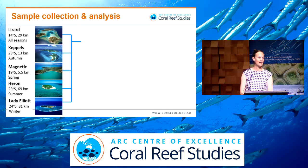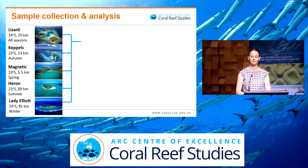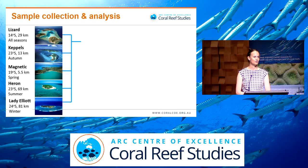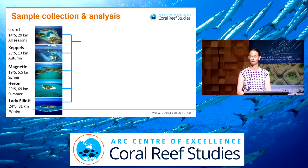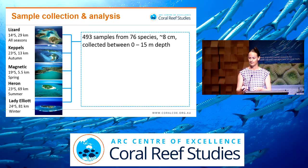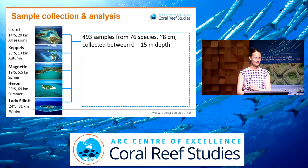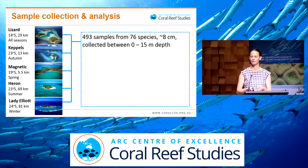The study design was to sample corals at many different locations along the Queensland coast. We had samples taken from Lizard Island, the Keppels, Magnetic Island, Heron, and Lady Elliot Island. These locations are at different latitudinal positions and differ in their distance from the shoreline, ranging from about 5.5 kilometres for Magnetic Island up to about 81 kilometres for Lady Elliot. We collected 493 coral samples covering 76 different species spread across these study locations. The samples were all about 8 centimetres in size and collected across a depth range between 0 and 15 metres.